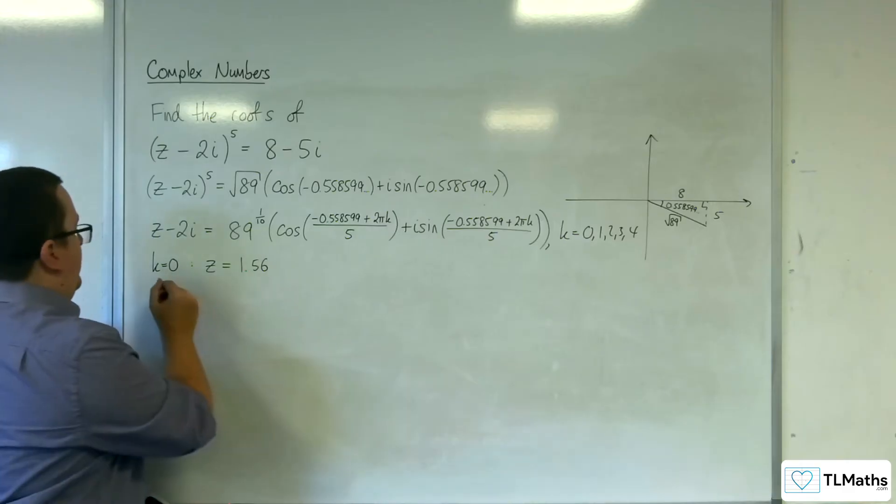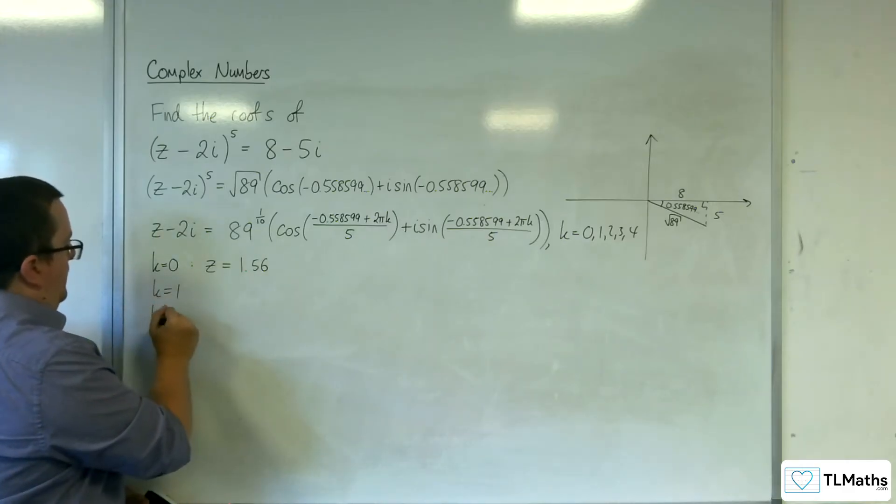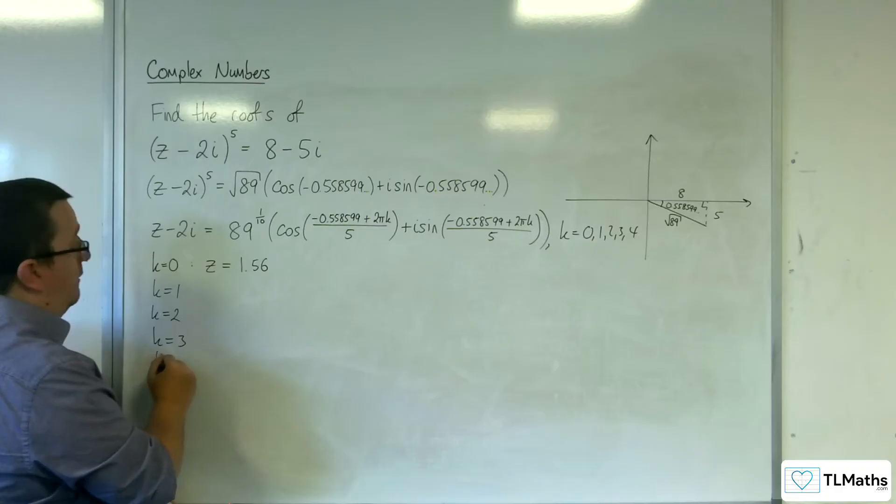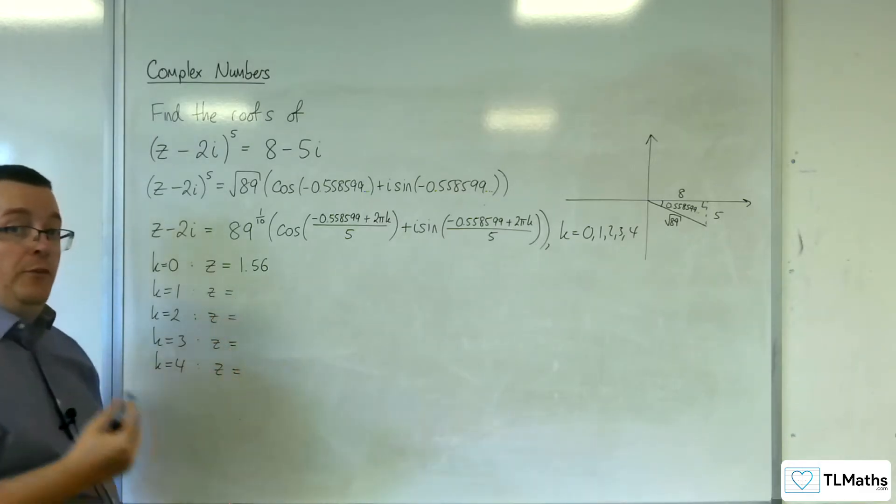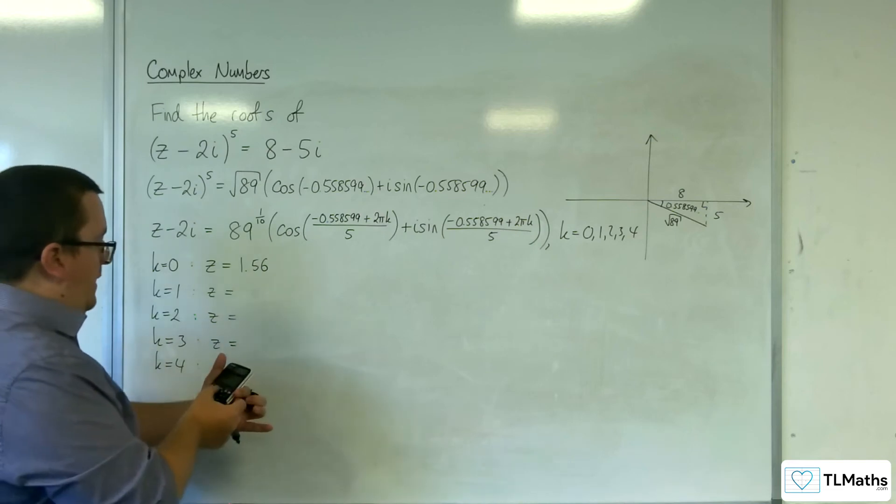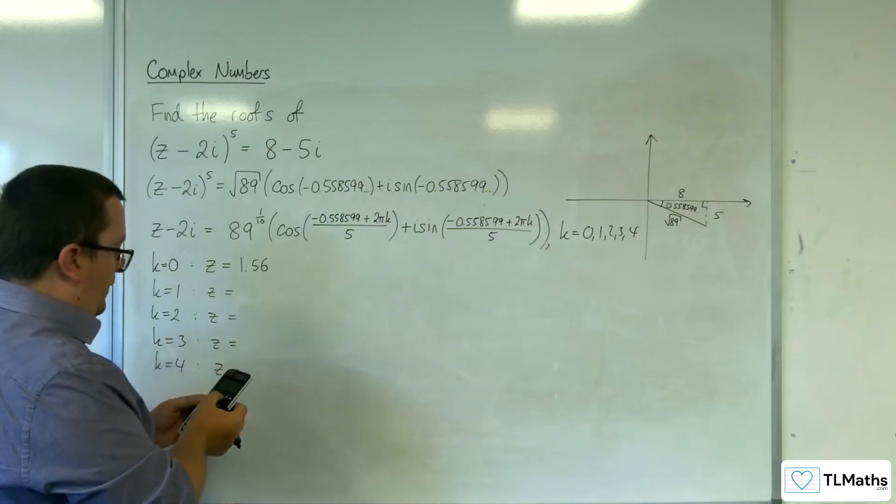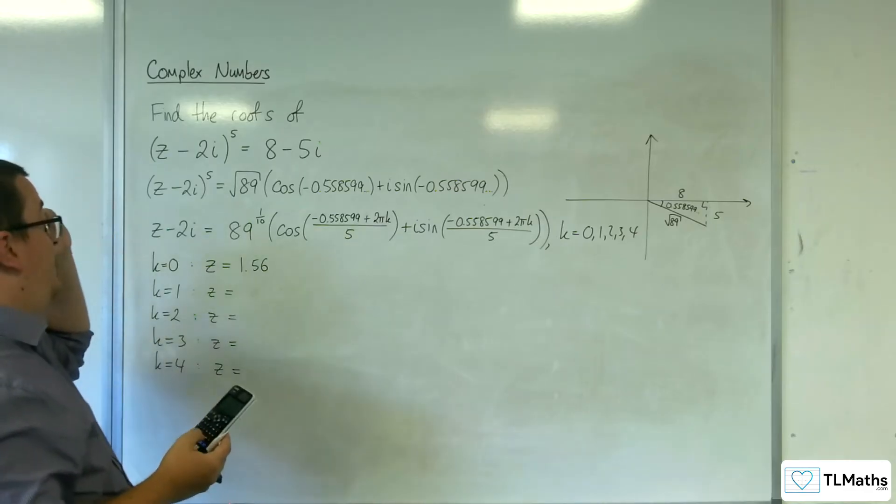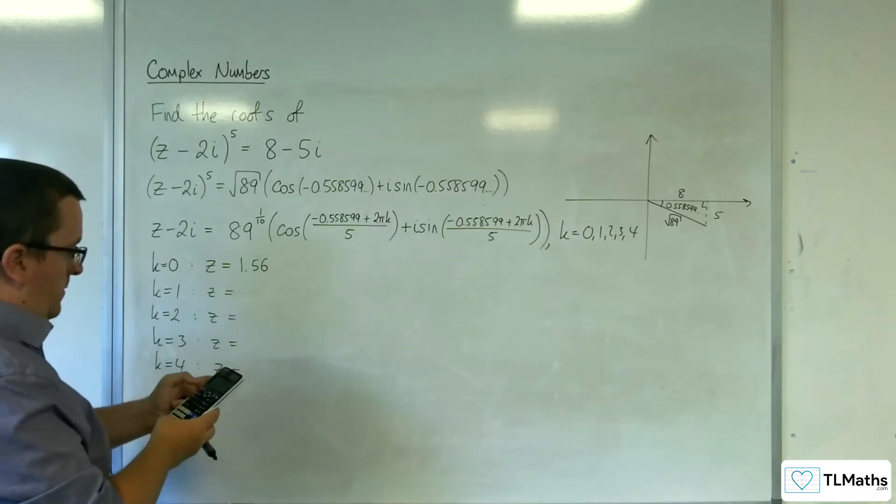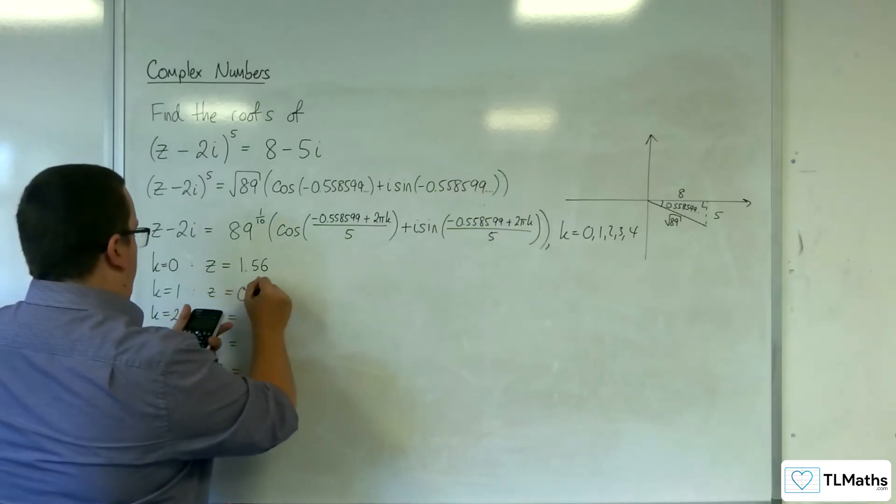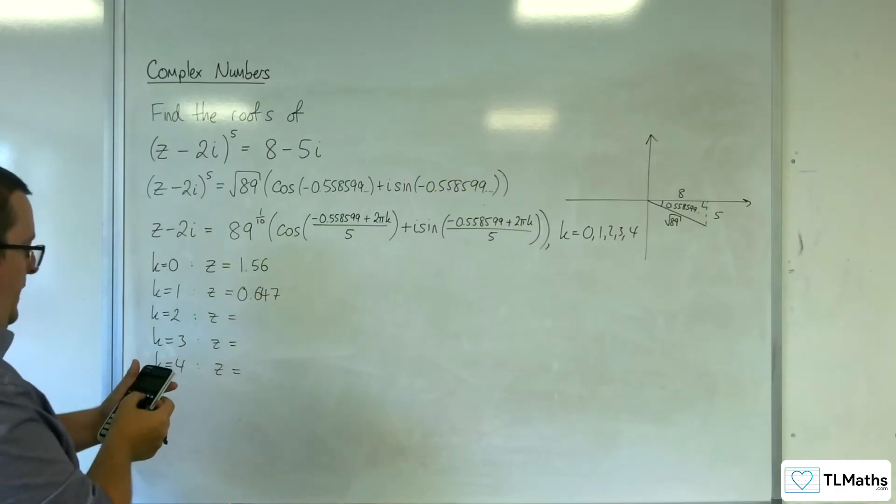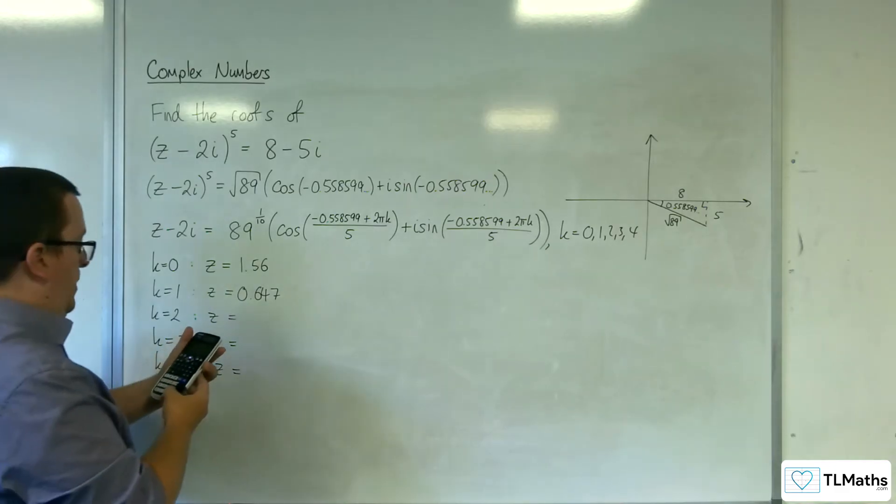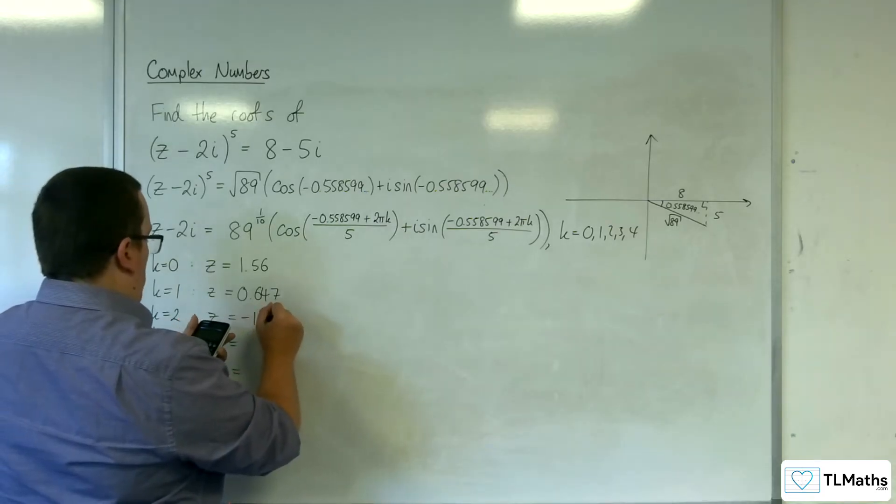Now in order to speed this up, you could use the table function on your calculator to help. But if I work out each of the cosine bits first, then that's going to really speed this process up. So I'm just going to change it to 2pi. So we get 0.647. That's when k is 1. When k is 2, we have 4pi. So minus 1.16.